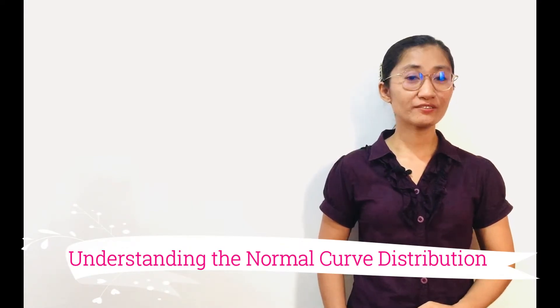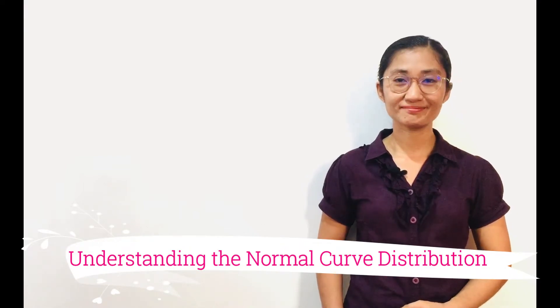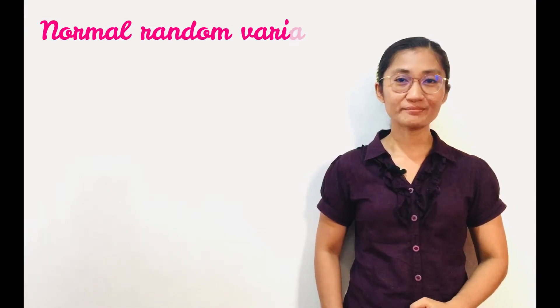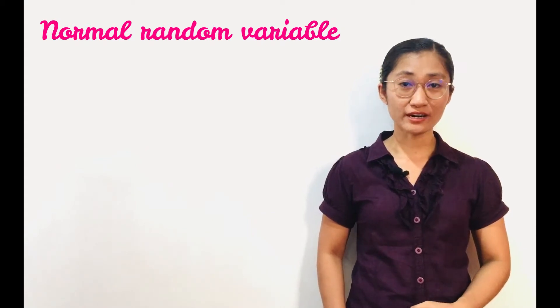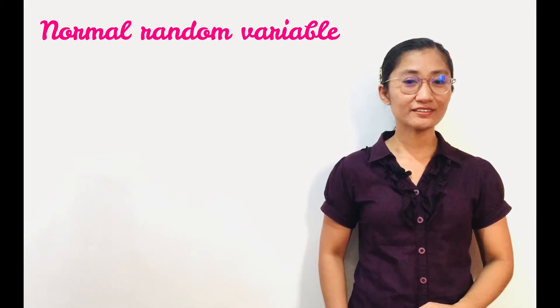Let us begin with defining a normal random variable. Normal random variable is one of the most commonly observed continuous random variables. Its probability distribution is called normal distribution.